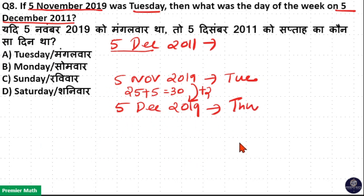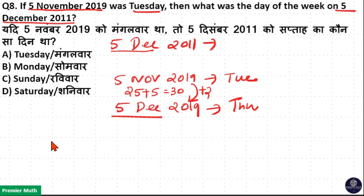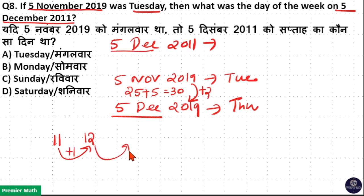Now we have equalized the date and month. Now take the odd days between 2011 and 2019. So 2011 is a non-leap year, so one odd day — 365 days means one odd day. Now 2012 is a leap year, so 366 days, that is two odd days.